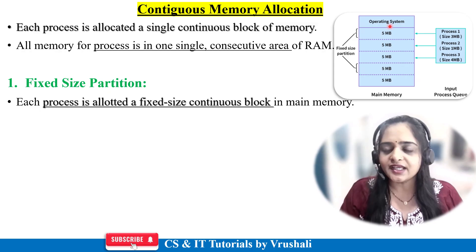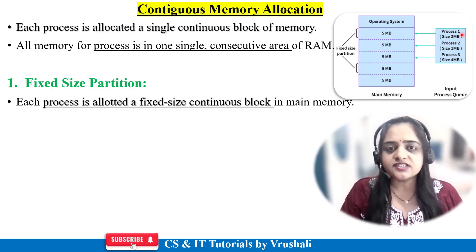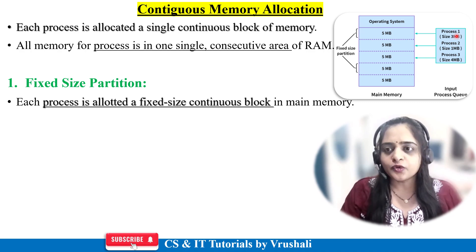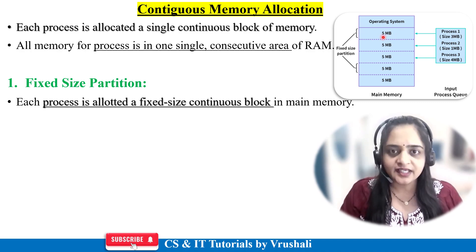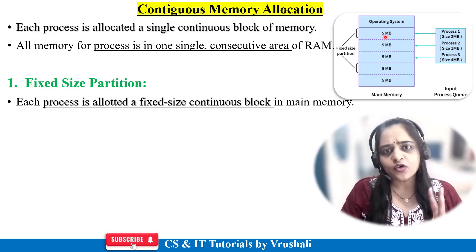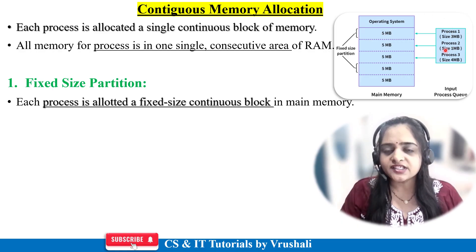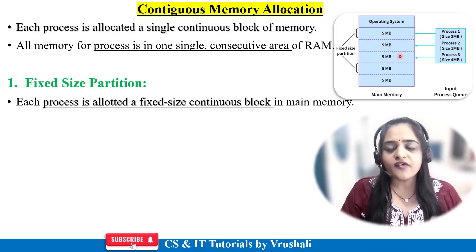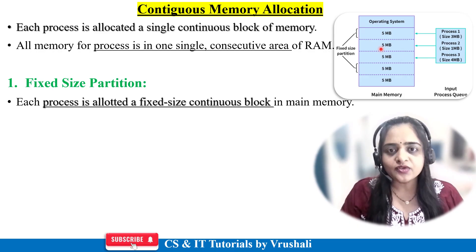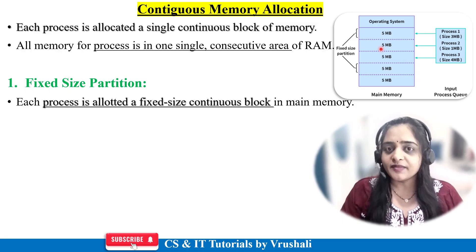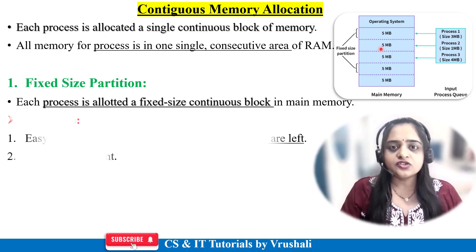In fixed size partition, main memory is divided into equal parts of 5 MB each. Suppose process 1 comes and requires 3 MB of memory for execution — it goes to the first block and executes there. But from the 5 MB allocated, only 3 MB is used, so 2 MB is wasted. Process 2 then executes in the next continuous block. Process 2 requires only 1 MB, but with the fixed 5 MB partition, 4 MB is wasted.